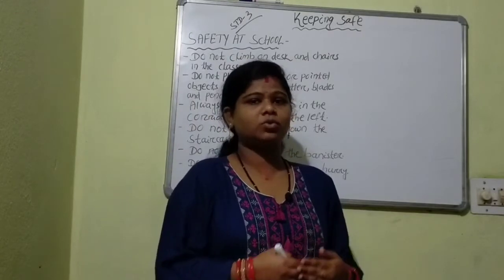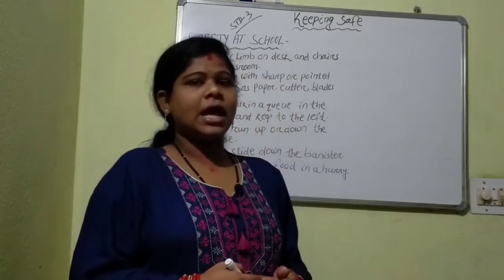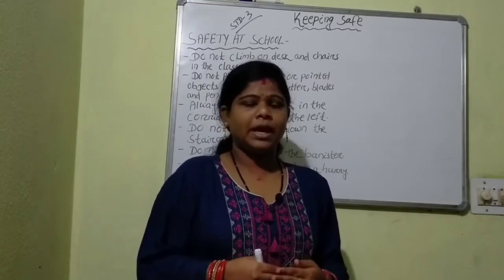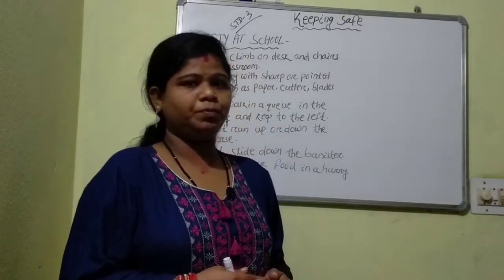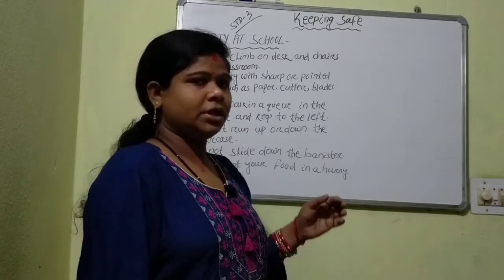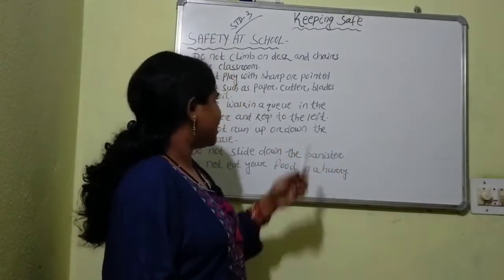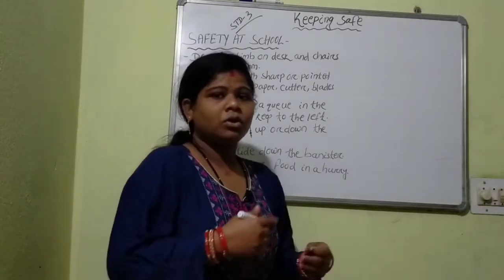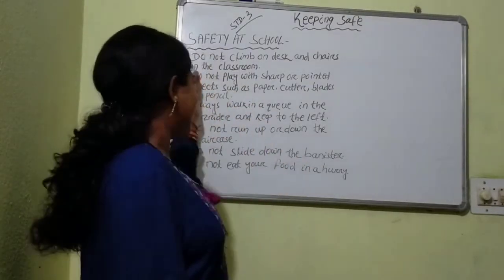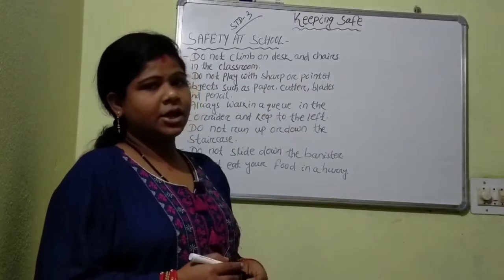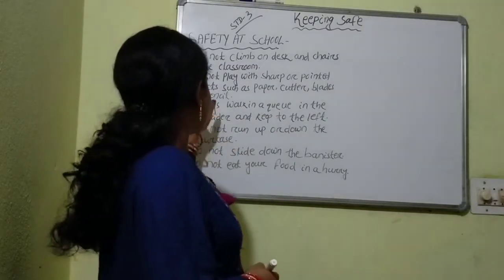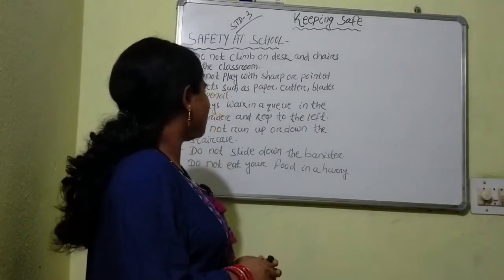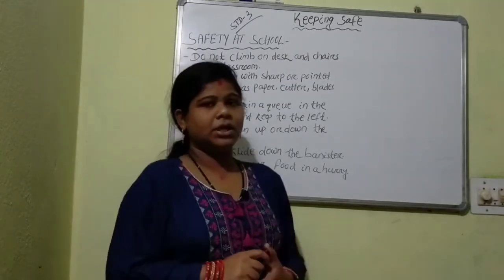How can we stay safe in school? Many children are getting hurt in the school, on the playground or in the classroom. Do not climb on desks and chairs in the classroom — if you climb on the desk and chair, you may get hurt. Do not play with sharp or pointed objects such as a paper cutter, blades, and pencil.